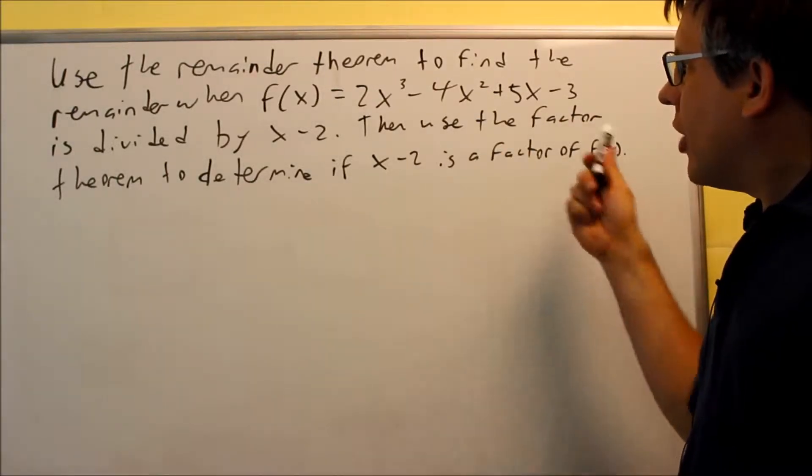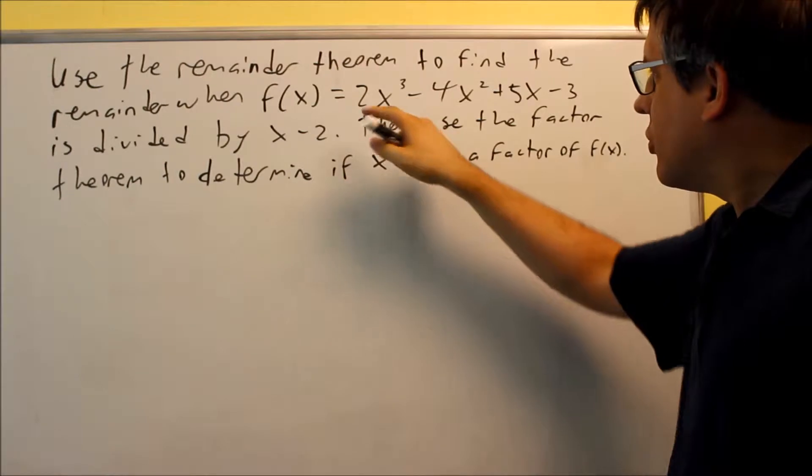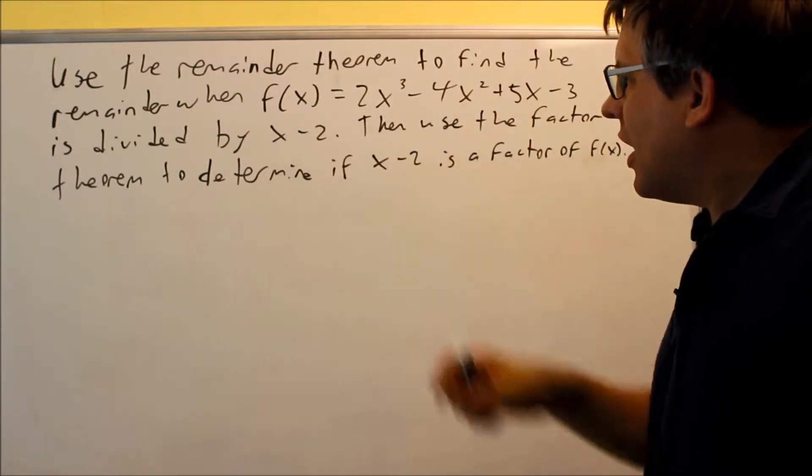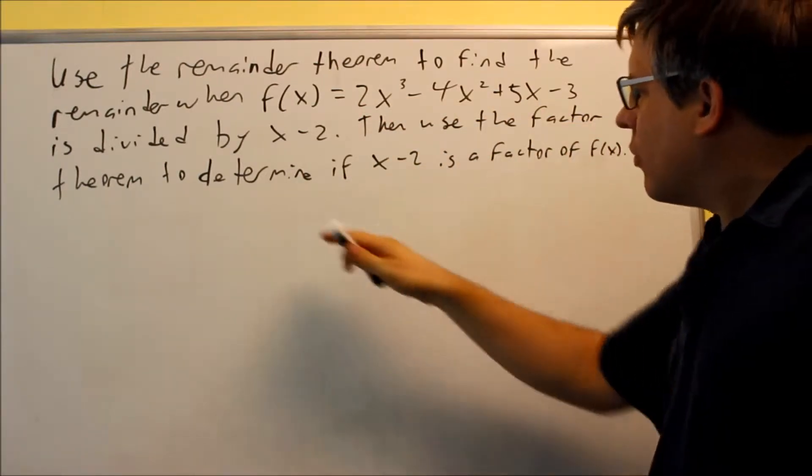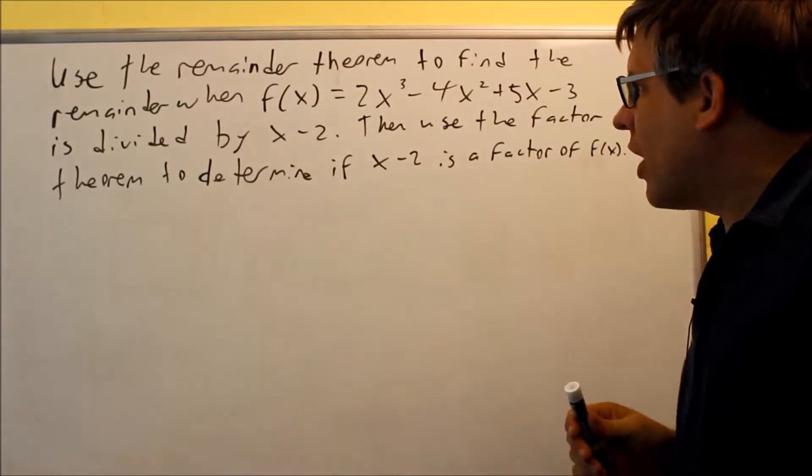Okay, we're going to use the remainder theorem to find the remainder when f(x), which is this, is divided by x minus 2, then use the factor theorem to determine if x minus 2 is a factor.